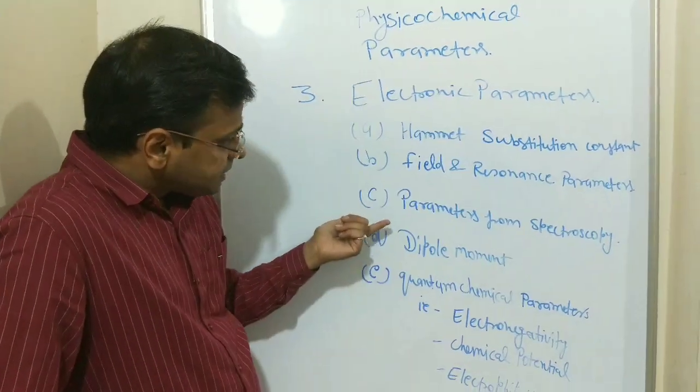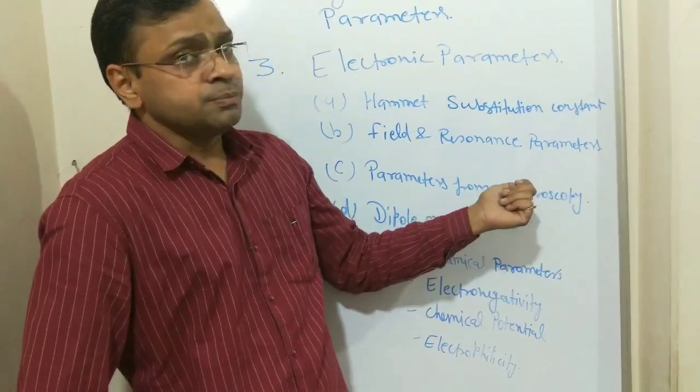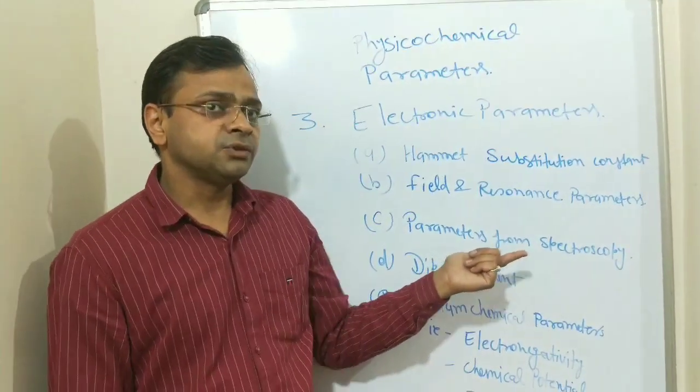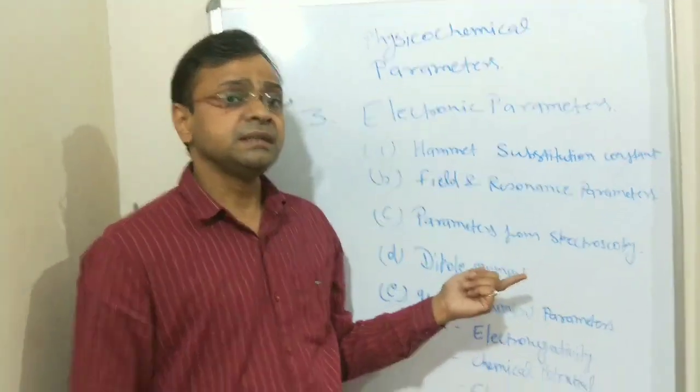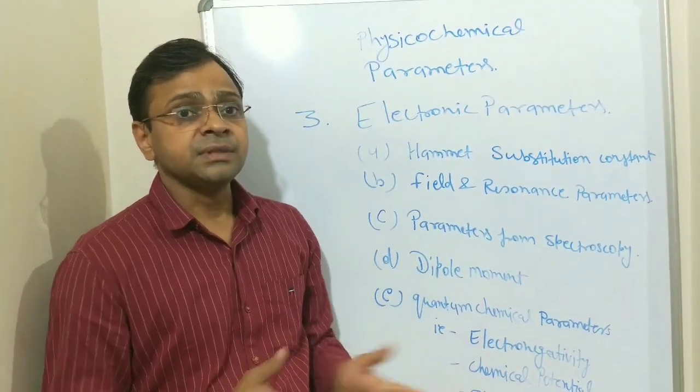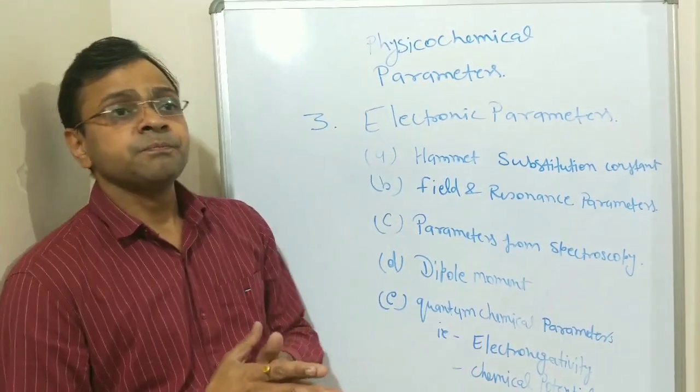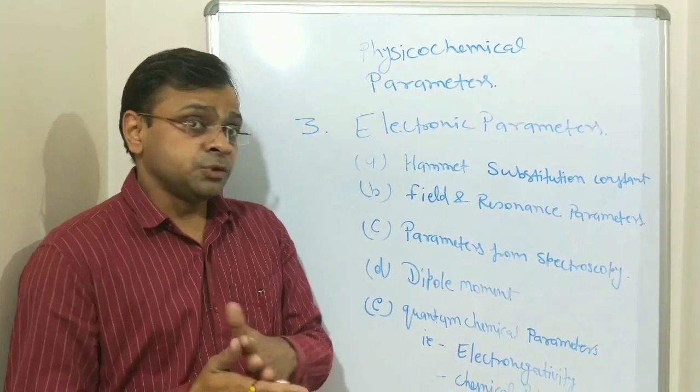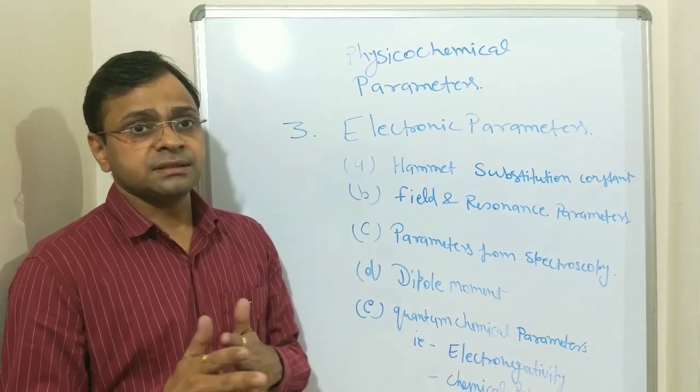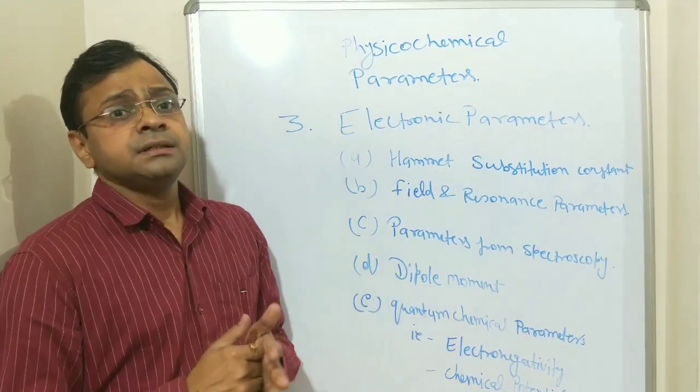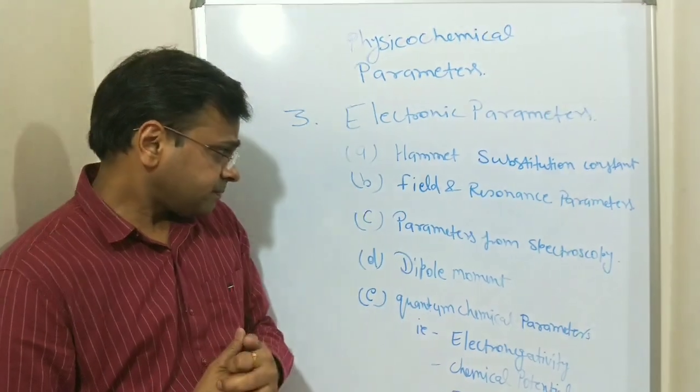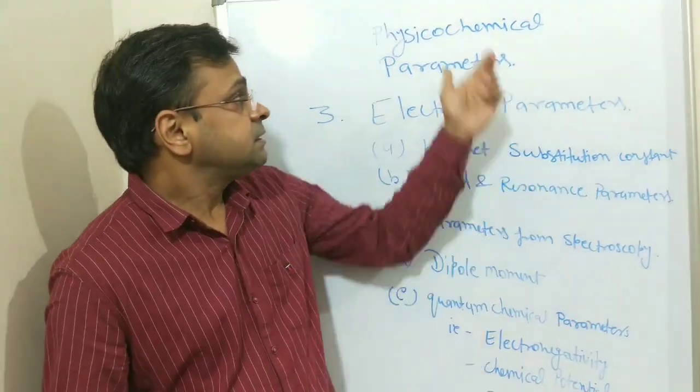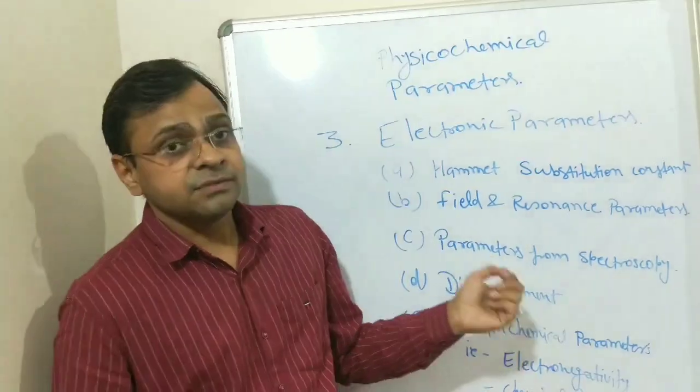Third one is parameters from spectroscopy. A lot of parameters are obtained from spectroscopic analysis. Spectroscopic analysis like IR, NMR, mass spectroscopy, and other types like LCMS, GCMS data where chromatographs are also incorporated with spectroscopy. So these data are very important and they impart their effect as a physicochemical parameter for QSAR.